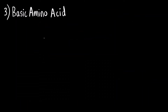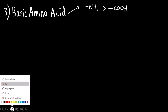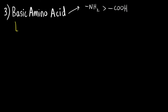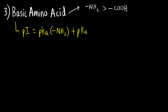The third and last case is basic amino acids. Basic amino acids have more amine groups than carboxylic acid groups. For a basic amino acid, the formula for isoelectric point is: pKa of amine group 1 plus pKa of amine group 2, divided by 2.